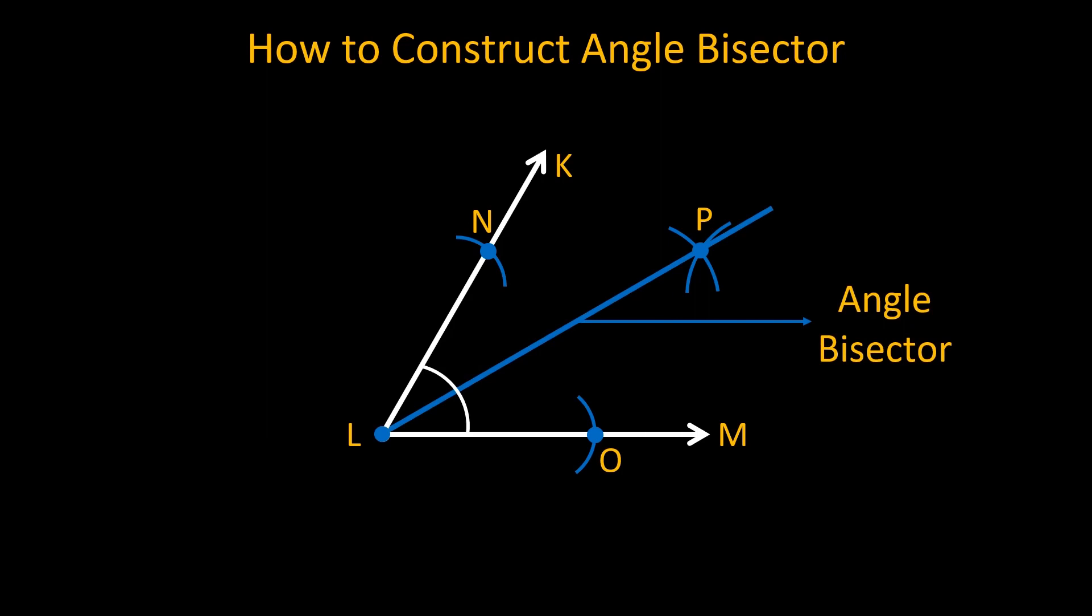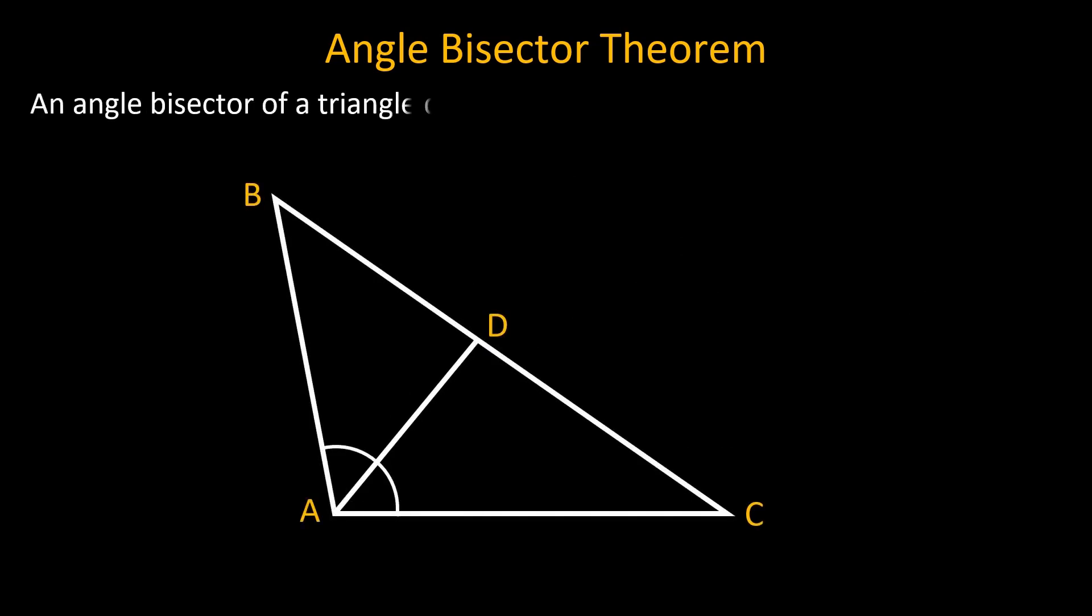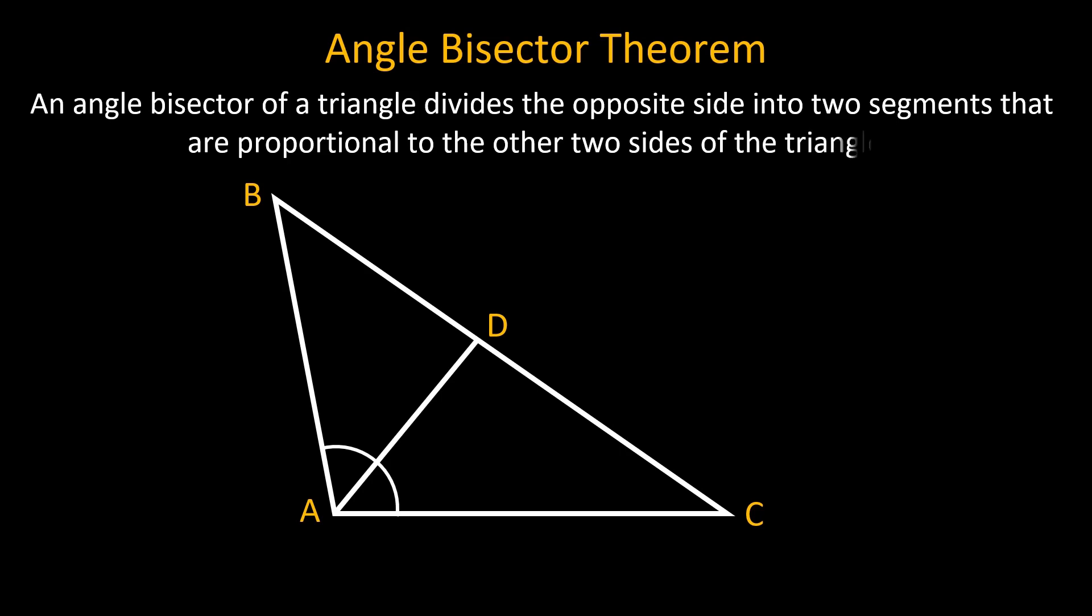Now let us study the angle bisector theorem. The angle bisector theorem states that an angle bisector of a triangle divides the opposite side into two segments that are proportional to the other two sides of the triangle.